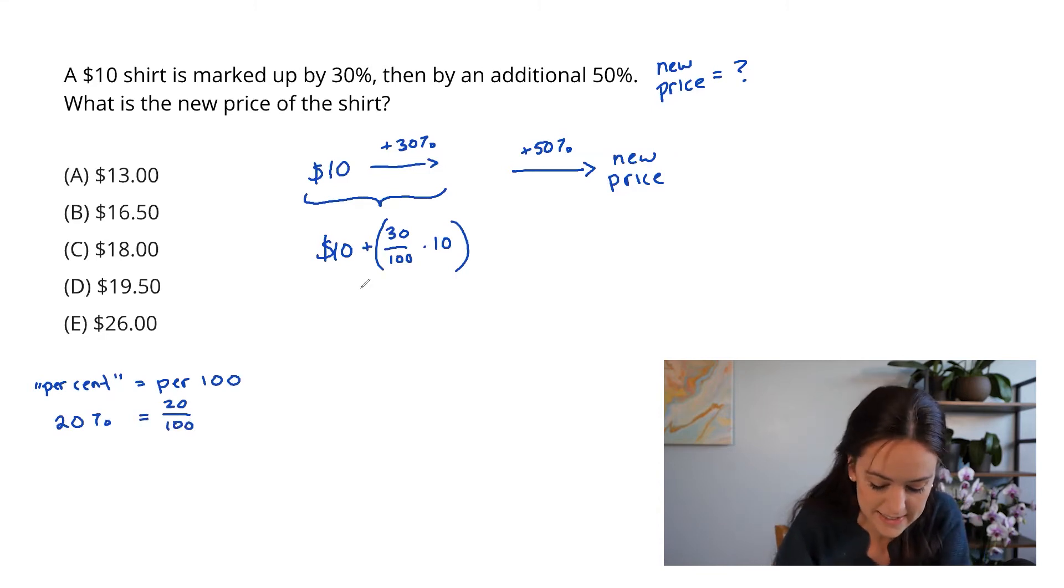Okay, so let's simplify this. We have $10, which is 10 plus 30 times 10 over 100. You can always cancel out zeros, so I'm going to do that. Then we have 10 plus 3 over 1, which is 3, which gives us $13.